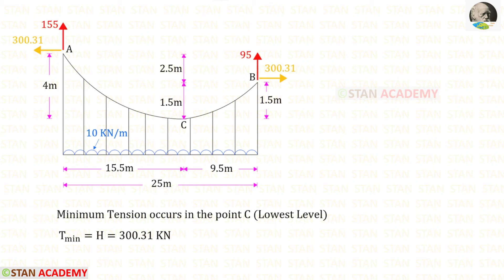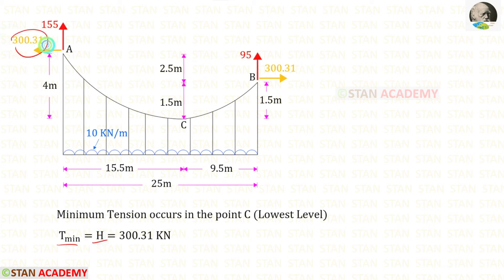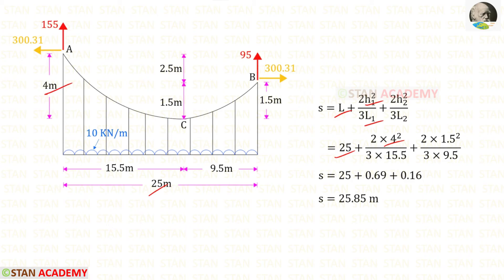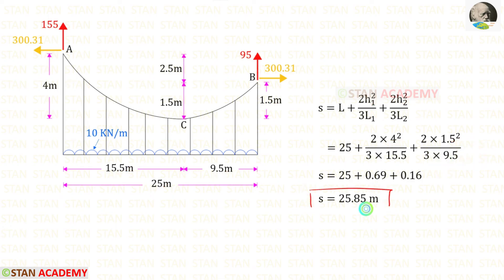The minimum tension occurs at point C because it is at the lowest level. The minimum tension equals the horizontal thrust itself, which is 300.31 kN. Now let us find the length of the cable S using the appropriate formula, where L = 25 m, h1 = 4 m, L1 = 15.5 m, h2 = 1.5 m, and L2 = 9.5 m. Finally, the length of the cable is 25.85 meters.